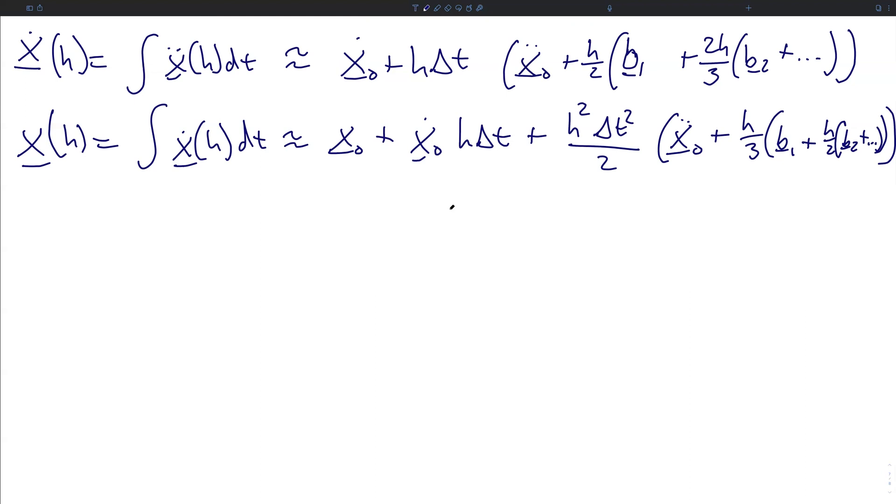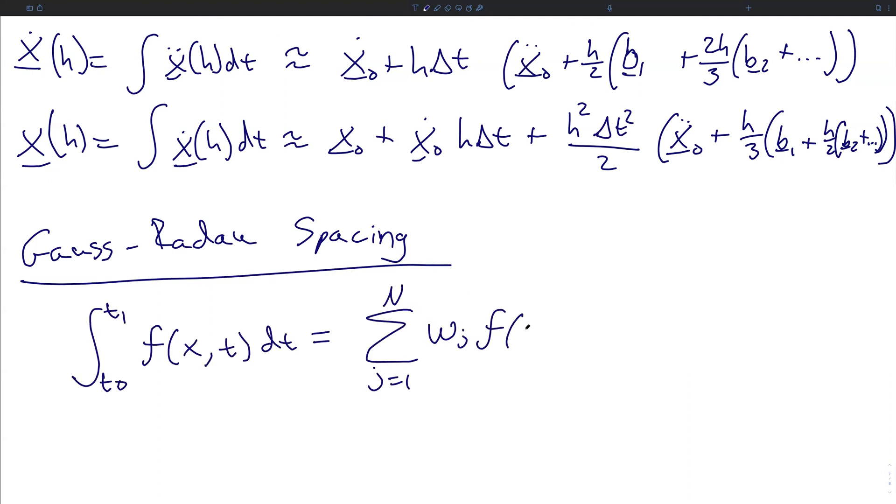In order to make these approximations accurate, we use what is known as Gauss-Radau spacing for the sub steps. The basic idea is that we want to match the integral from time t naught to t1 of some function f of x,t to the summation over n points of some weights w sub j times the evaluation of the function at nodes t sub j. So the w's are weights, and the t's are called nodes, and then whatever is left over is the error as usual.